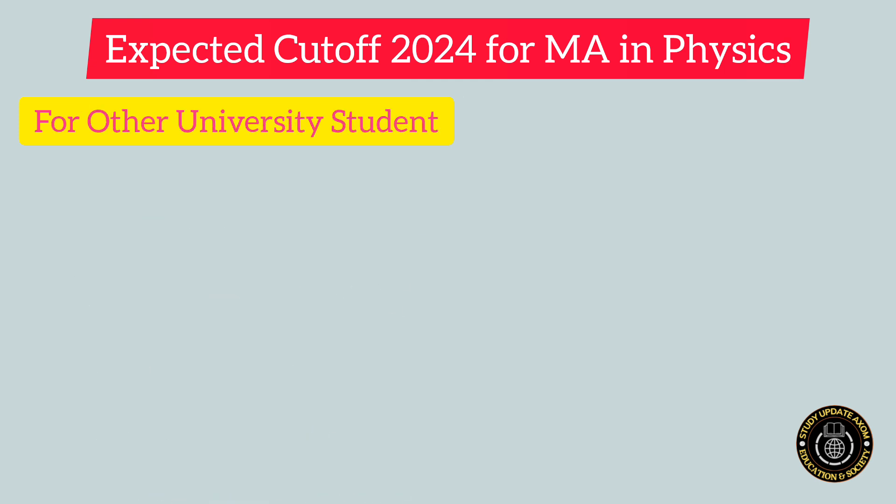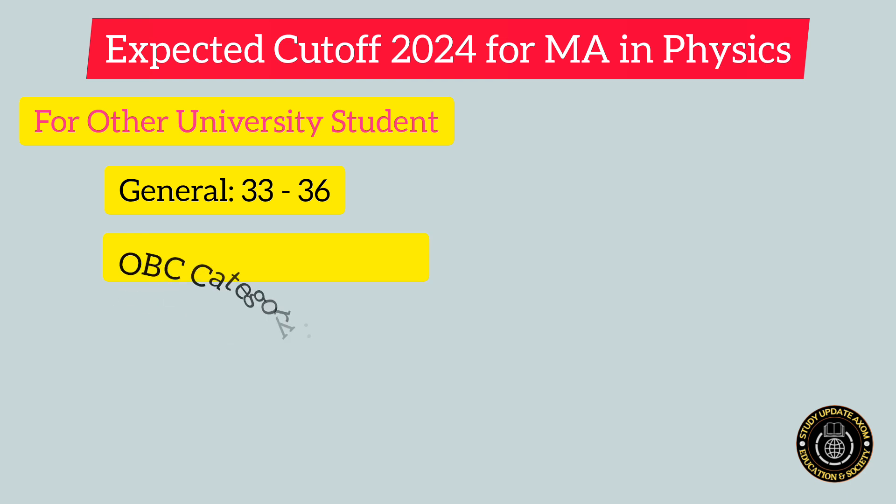For students from universities other than Guwahati University — meaning those who have completed their graduations from a university other than Guwahati University or its affiliated colleges — for the general category, the expected cutoff may be in between 33 to 36. For the OBC category, the range may be in between 32 to 35.